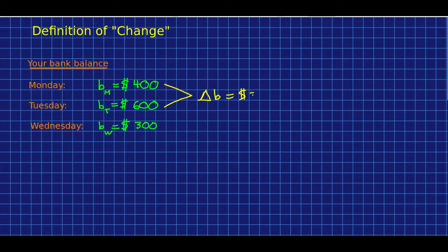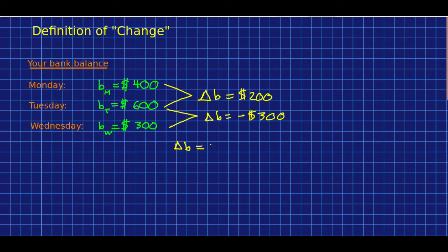I think we all agree the change in your bank balance was $200. Well, from Tuesday to Wednesday, it went from $600 to $300. You could say that your delta B was $300, but I think we want to distinguish between your bank balance going up and down. So it makes more sense to say that this one is negative $300. This now lets us get a definition: our change in our bank balance from some initial time to some final time is always the final value minus the initial value. And calculating it that way will give you consistent results. So this is how we will always define a change in any quantity — it is always the final value minus the initial value, where we have to change what we mean by final and initial from time to time as we're dealing with different events.